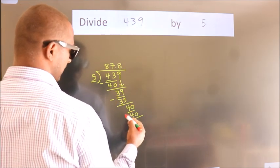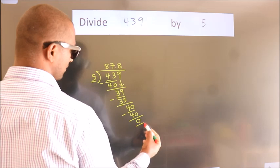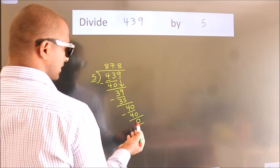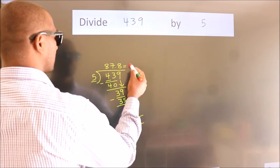Now, we subtract. We get 0. We got remainder 0. So this is our quotient.